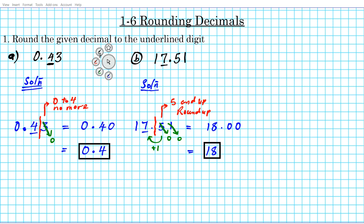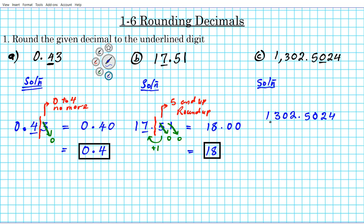For question 1C, we have a bigger number: 1,302.5024, and we're rounding to the zero digit. Let's rewrite the number: 1,302.5024. We're rounding to the zero digit — that's the hundredths place.